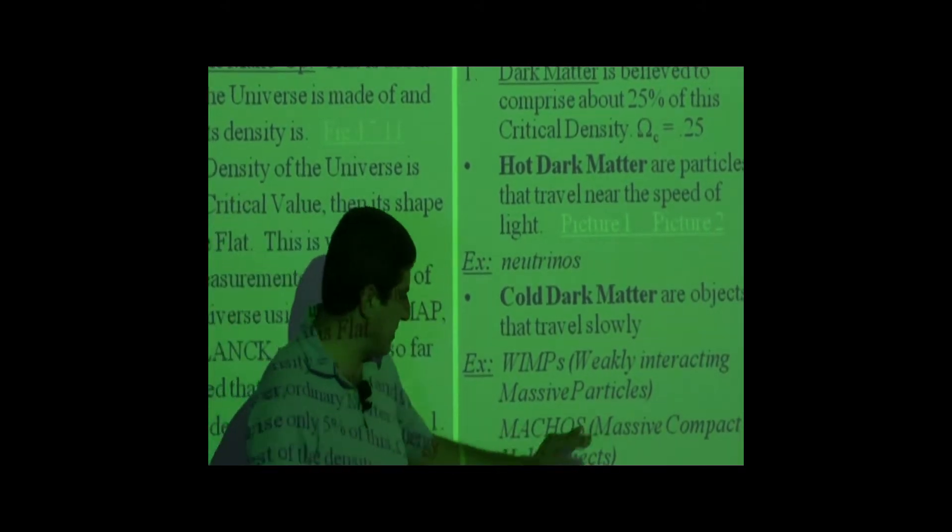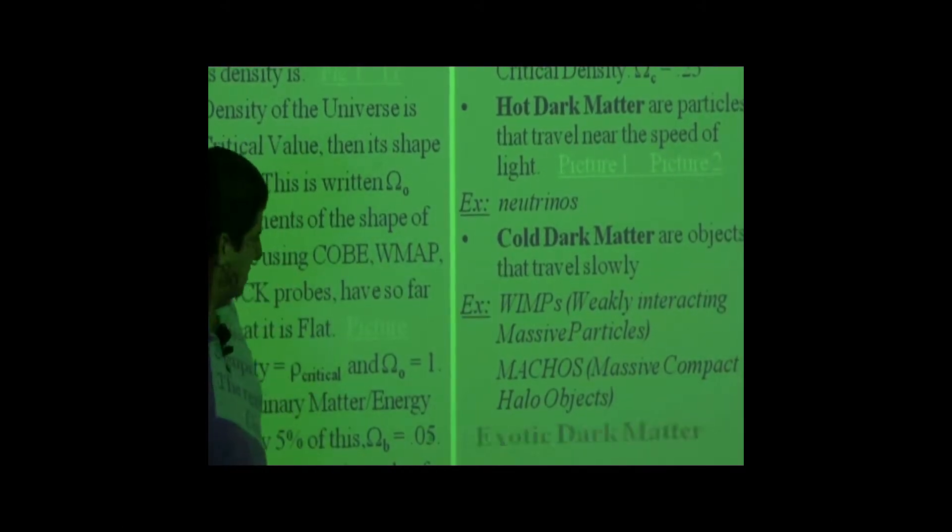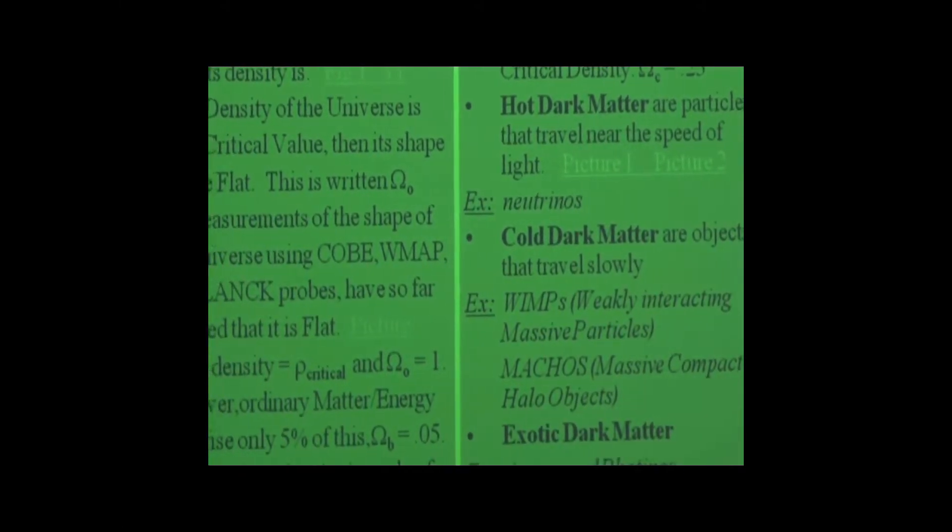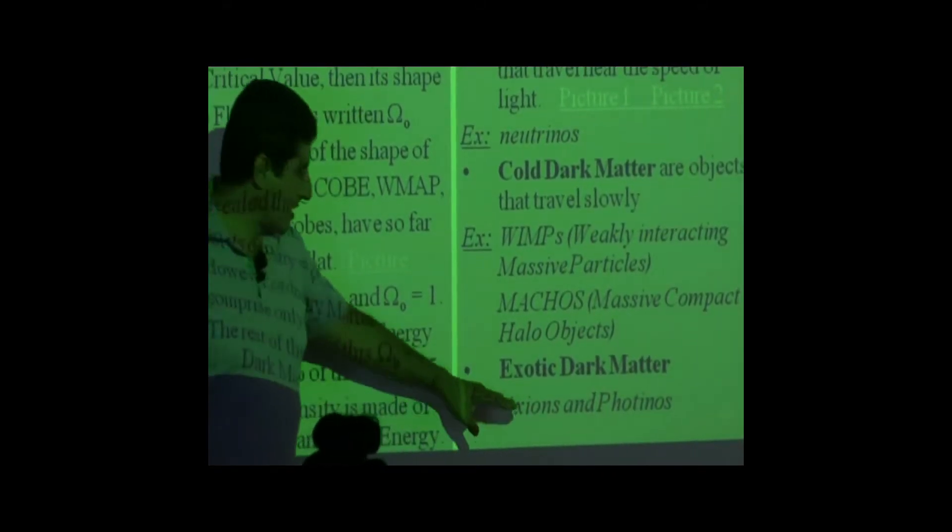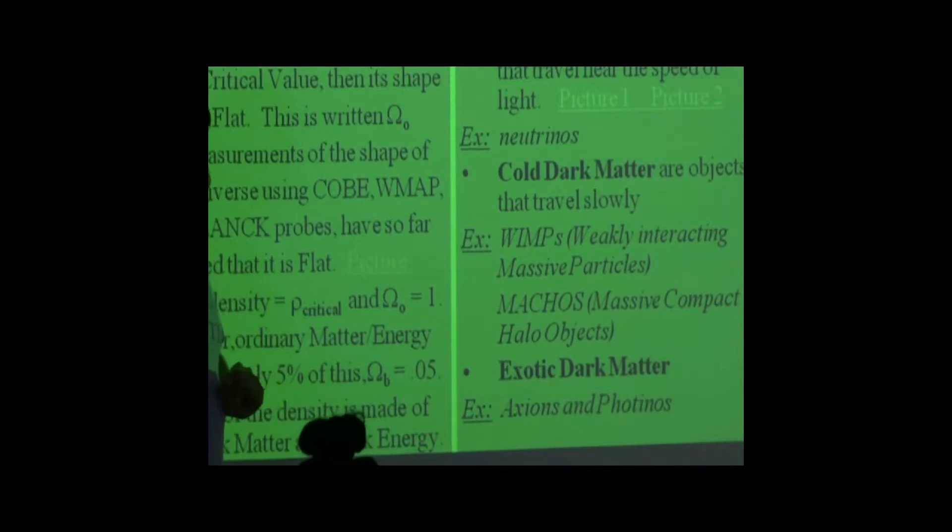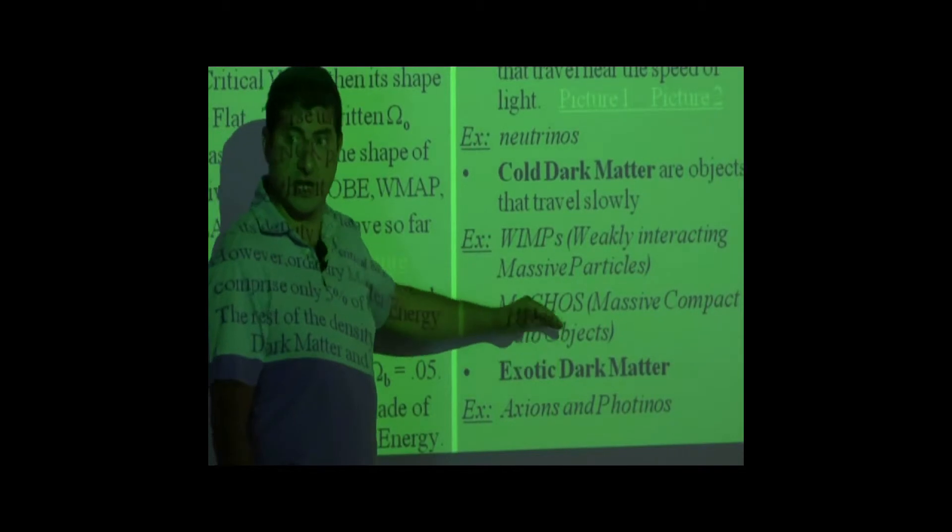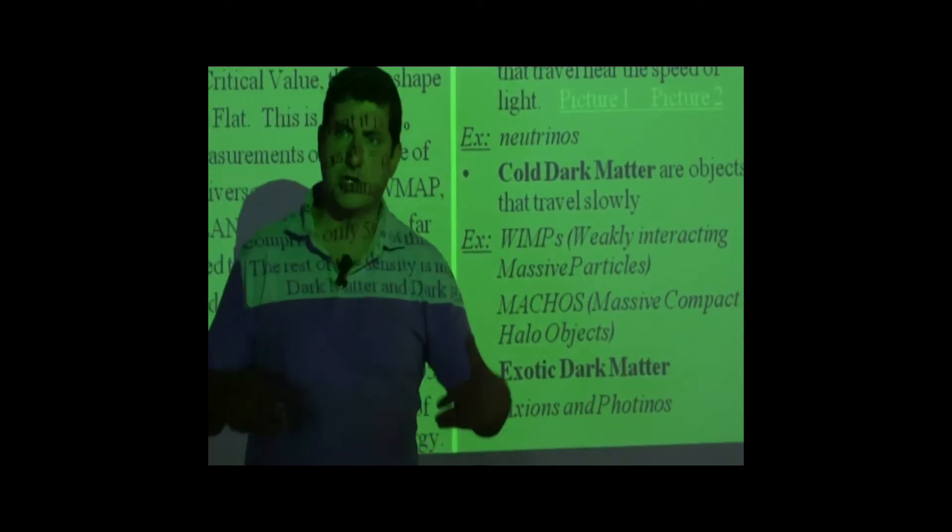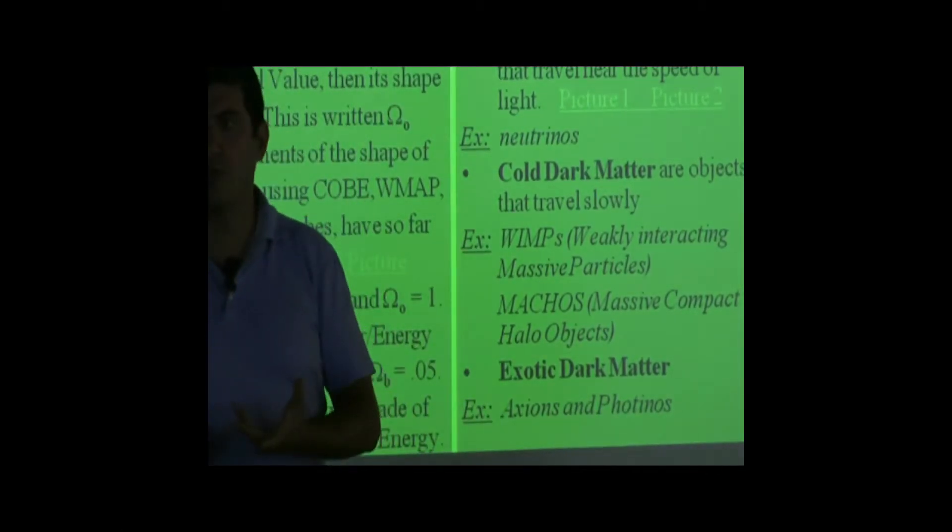Macho, massive compact halo objects. So those are cold dark matter. And exotic dark matter proposed are axions and photinos. So these are all examples of non-baryonic dark matter. Baryonic dark matter would be stars, brown dwarfs, other things that are so dark that we don't see them.